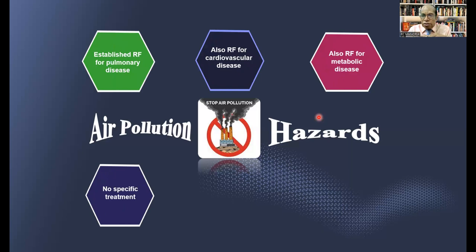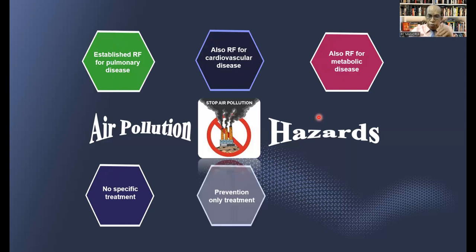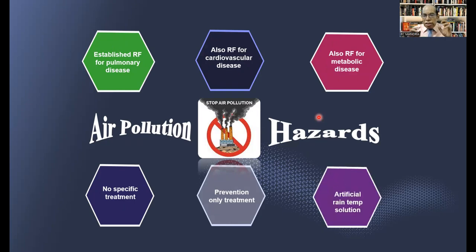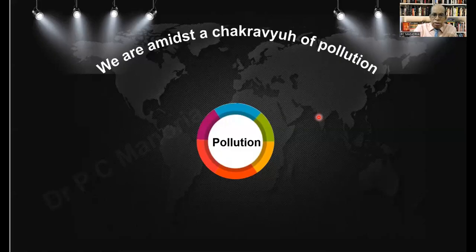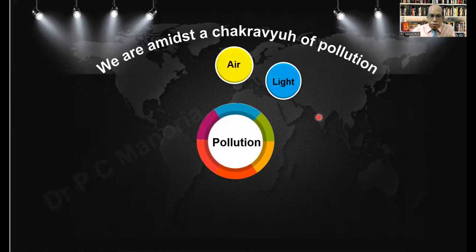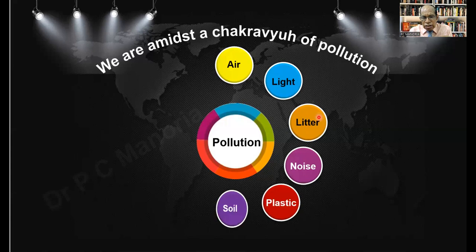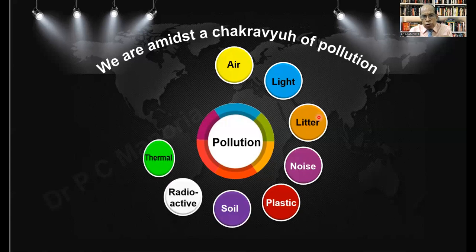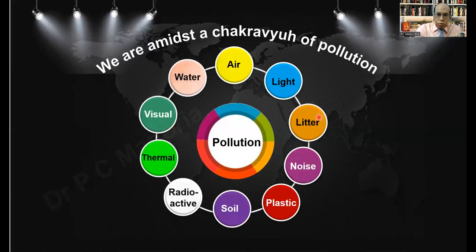Distressingly enough, there is no specific treatment, and prevention is the only treatment for air pollution. Artificial rain is only a temporary solution to minimize air pollution. Currently, we are amidst a chakravue of pollution as you can see on the slide, but today I'm going to talk only on air pollution.